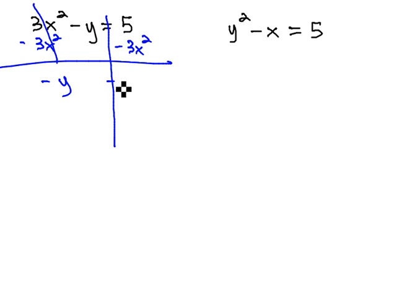This gives us negative y equals negative 3x squared plus 5. Be careful, they're not like terms. We can't combine the negative 3 and 5.